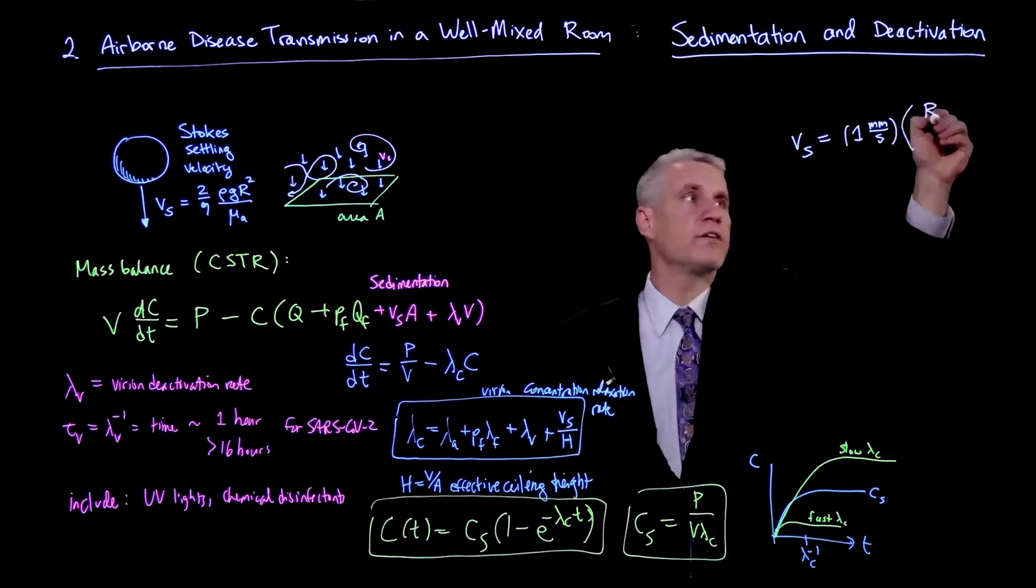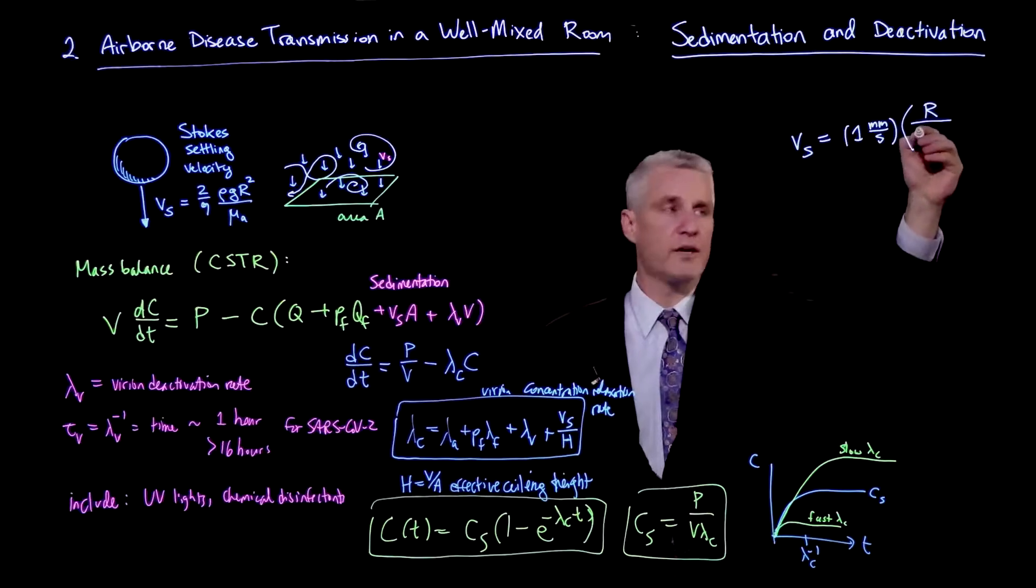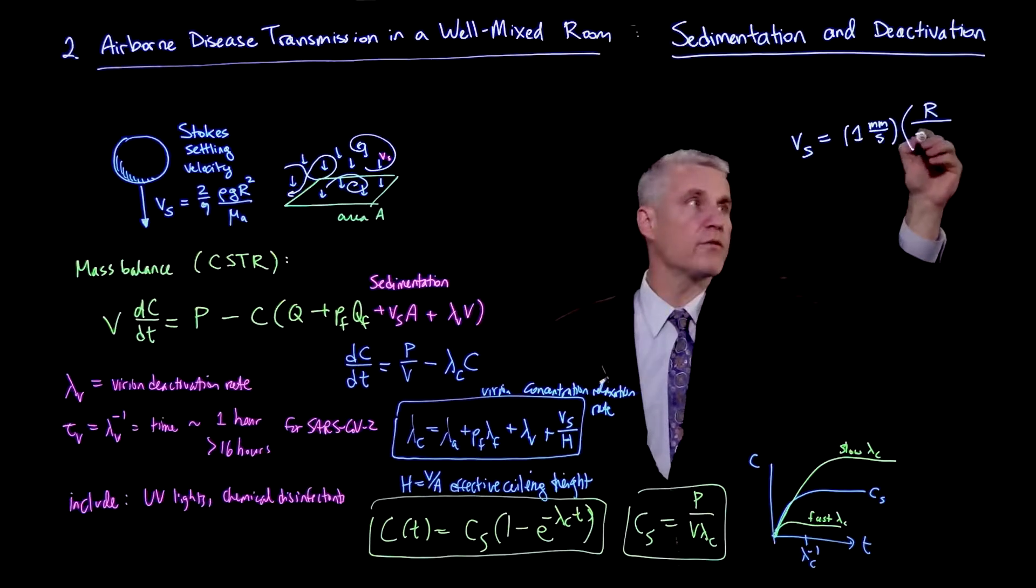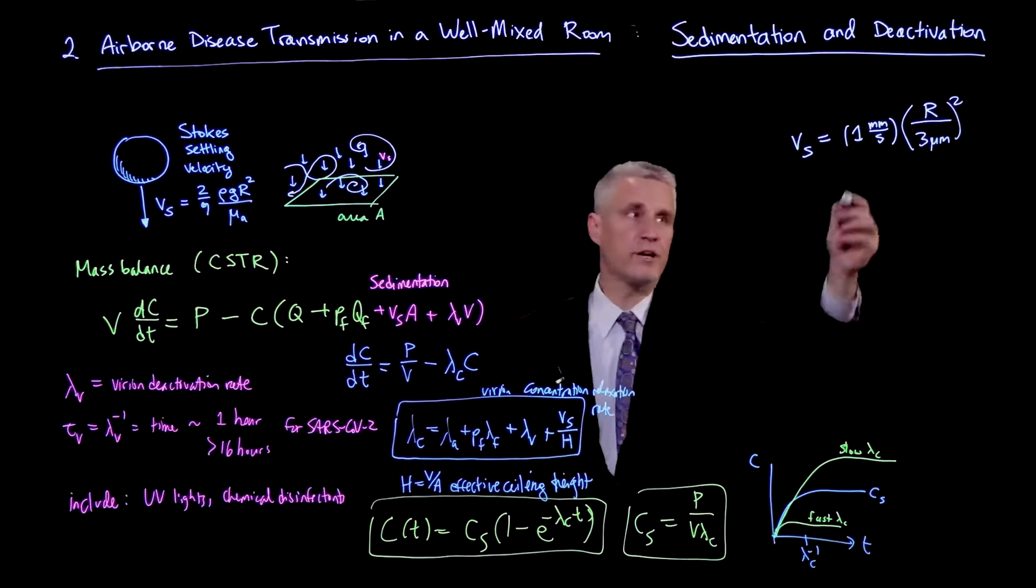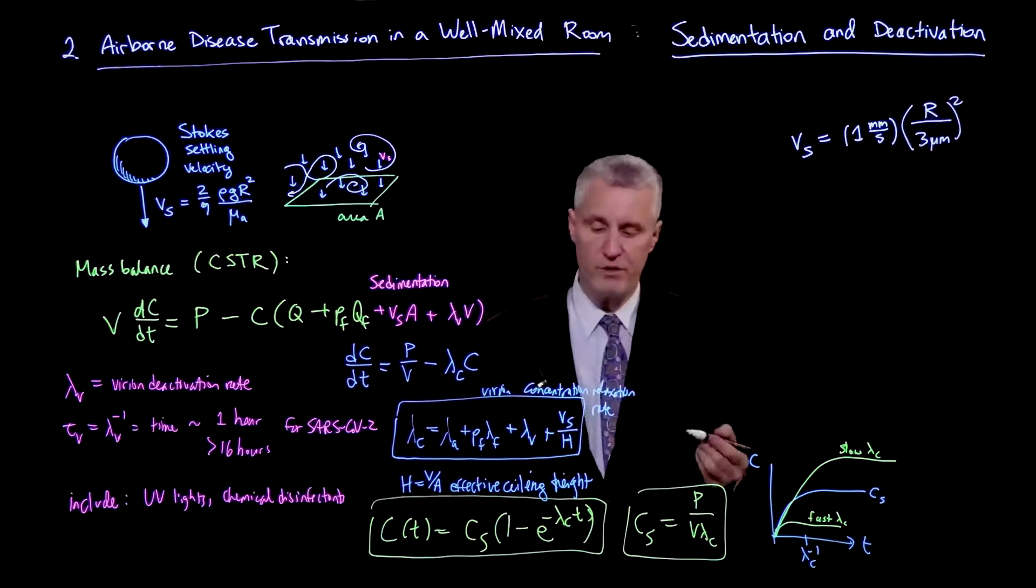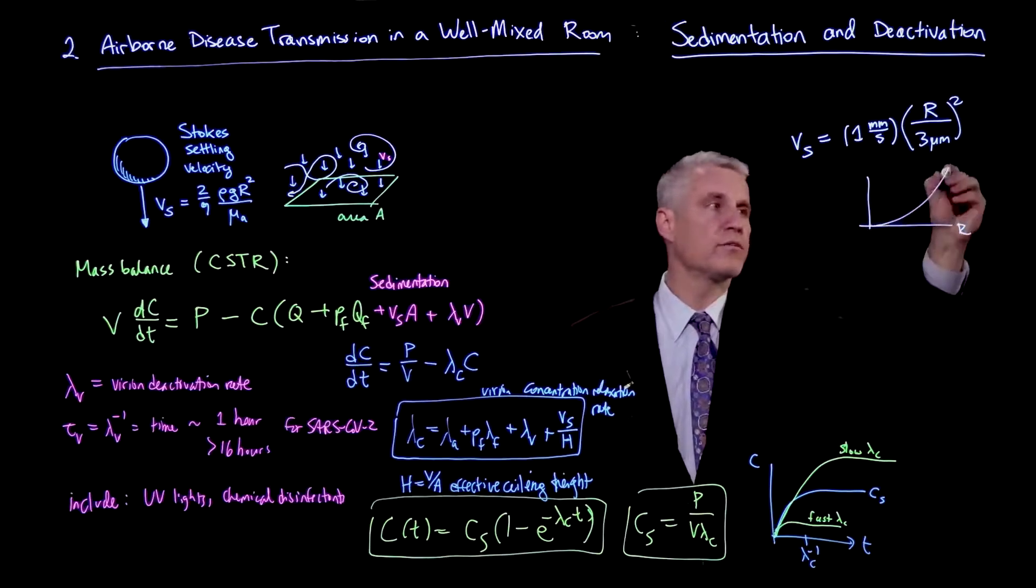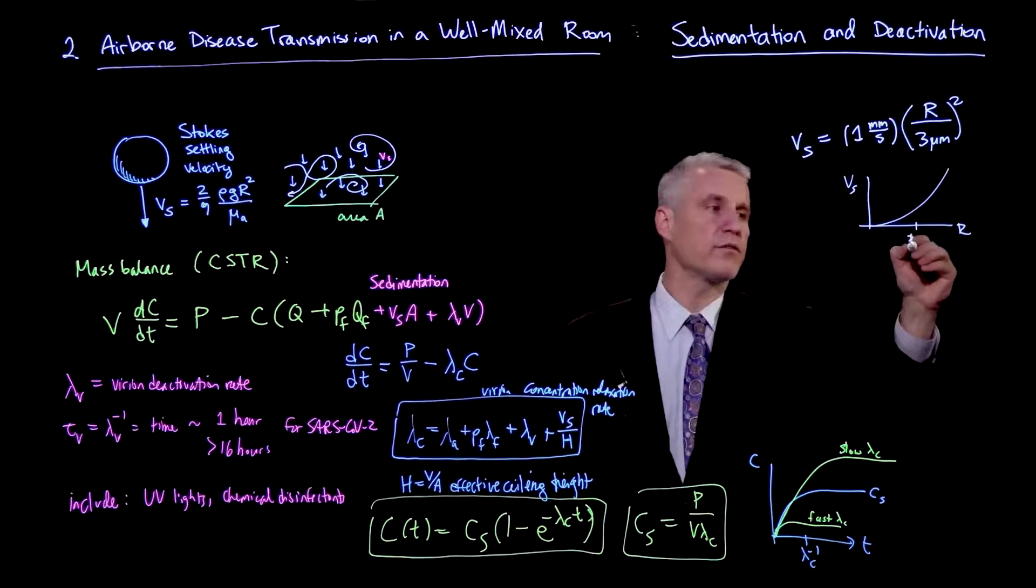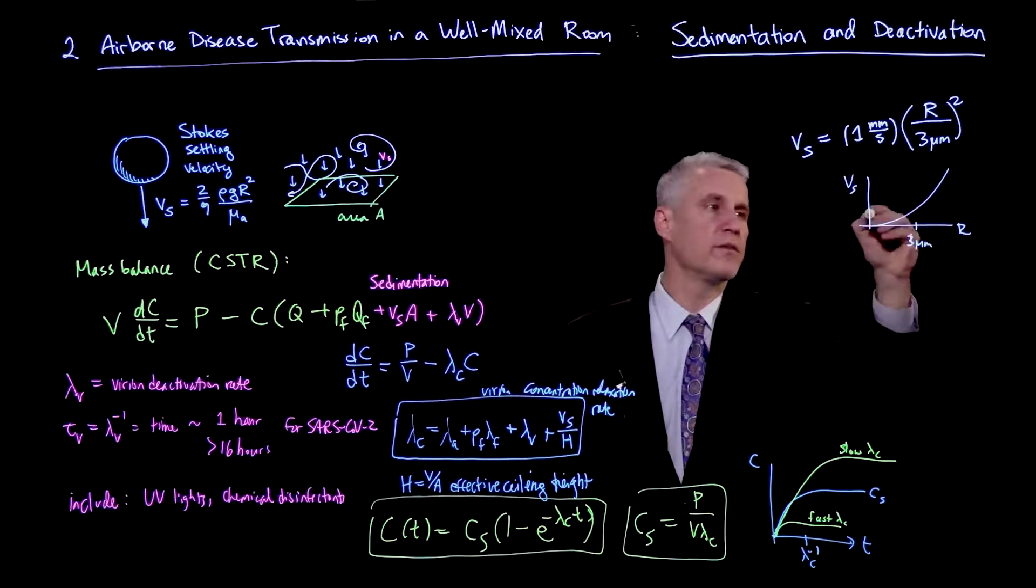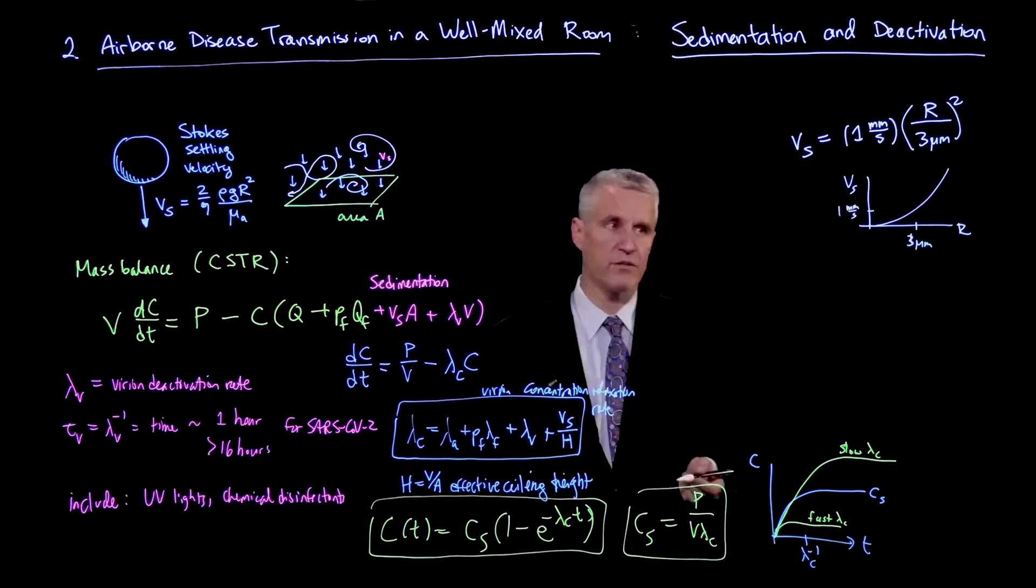And the radius comes in squared. So if I take a given radius r, if I want to know how it depends on r, it's r divided by about 3 microns squared. So if you give me a different radius, then basically the sedimentation velocity depends on r that way. So it'll look something like this, where at 3 microns, the value is 1 millimeter a second. So that's the scale we're talking about.